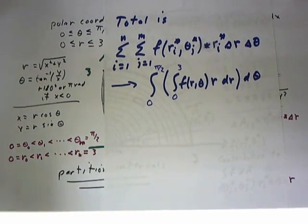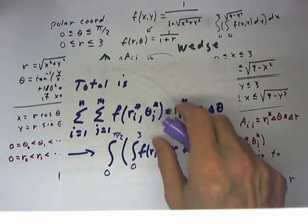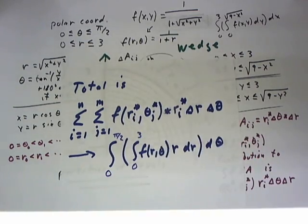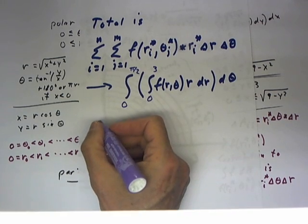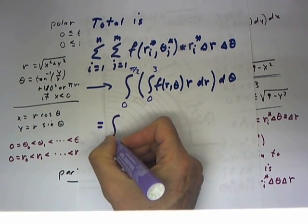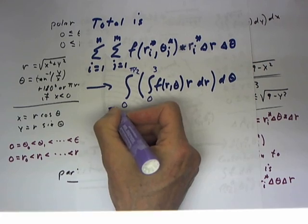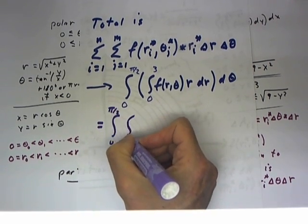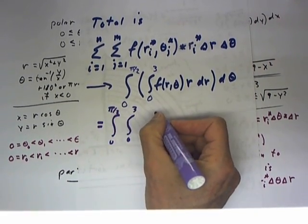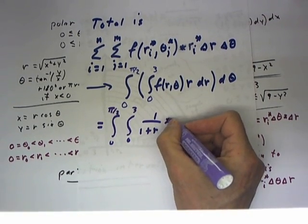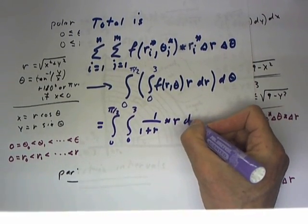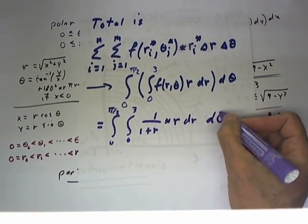Recalling that f(r,θ) is one over one plus r, this integral then becomes the integral from zero to pi over two, the integral from zero to three, of one over one plus r, times r dr dθ.